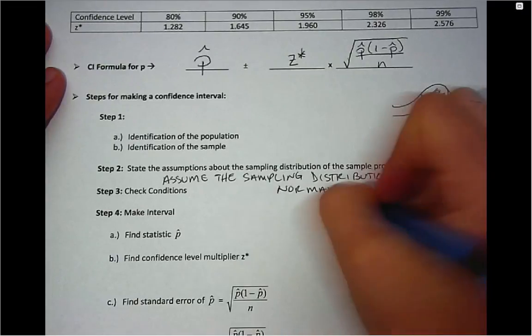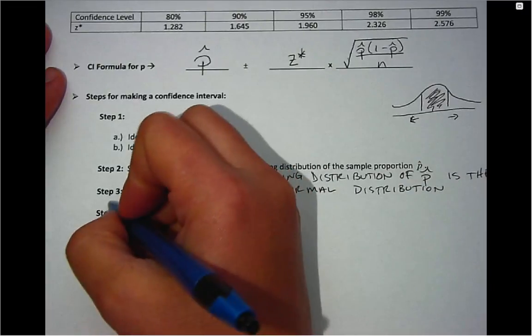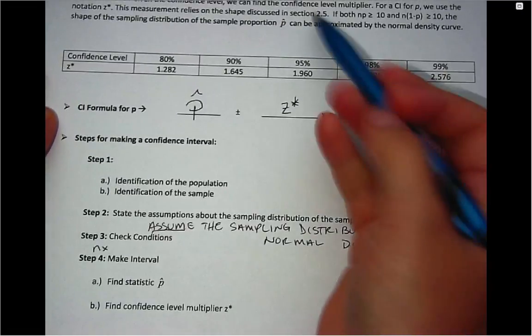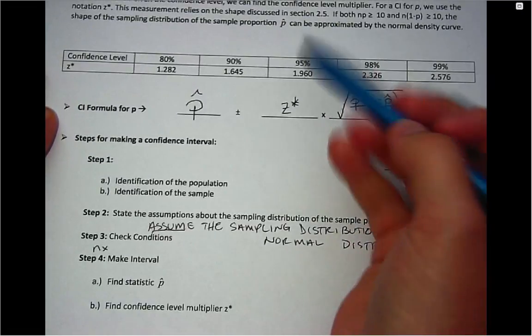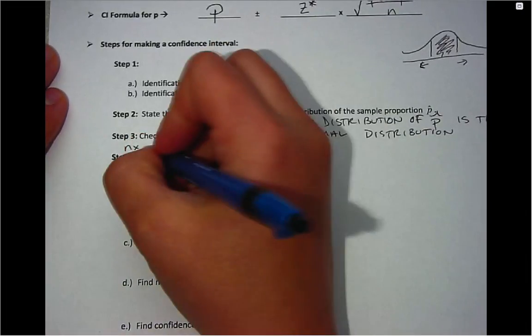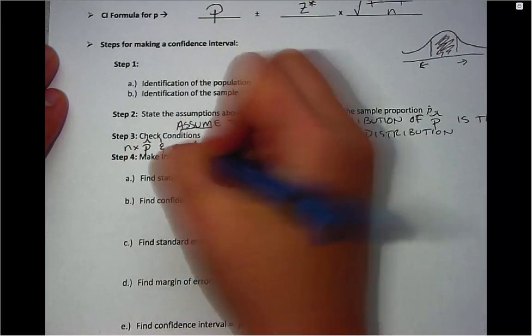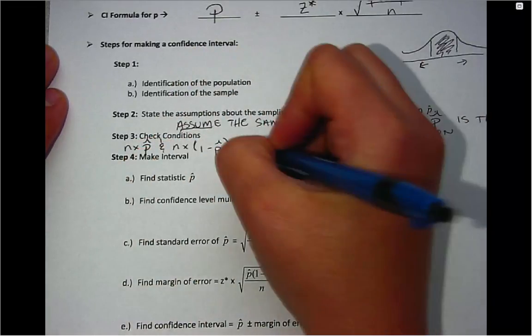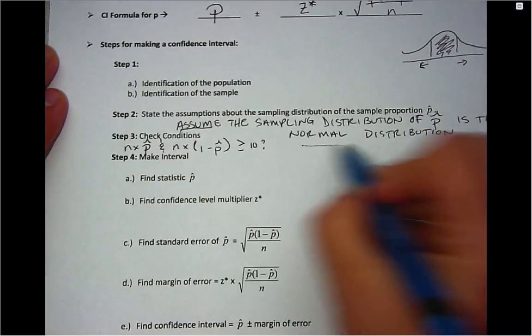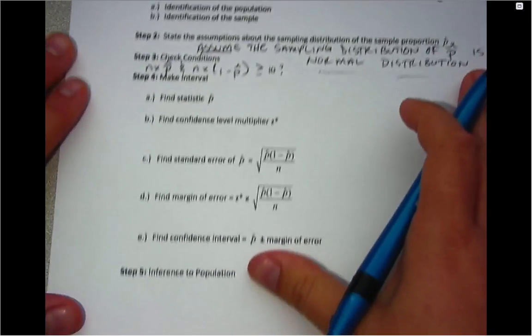In order for you to make that assumption, two things have to be true. Similar to what we did with the sampling distribution where we had n times p and n times 1 minus p having to be greater than 10, we will do the same type of thing here. But remember, we don't have p. Instead, we replace p with p-hat, just as we did for the standard error formula. So if these two things are true, then we know that our assumption about the normal distribution is correct.